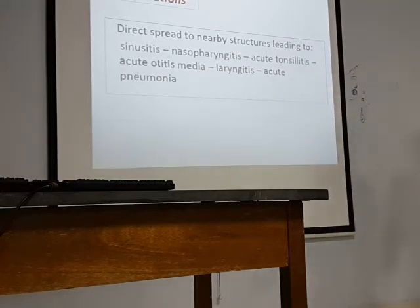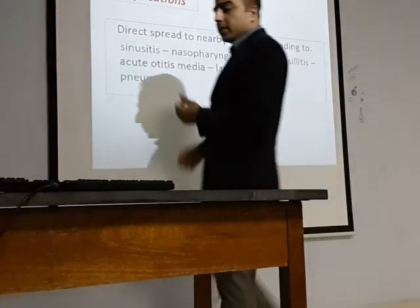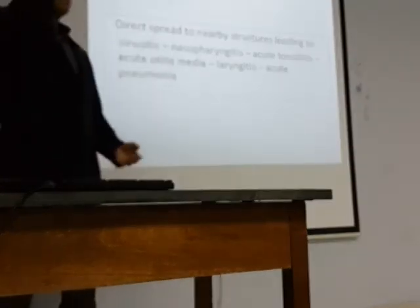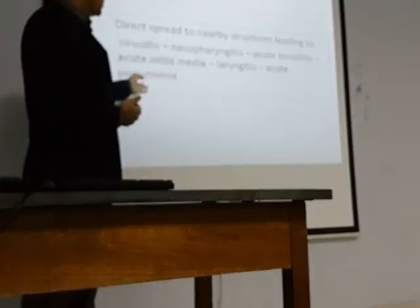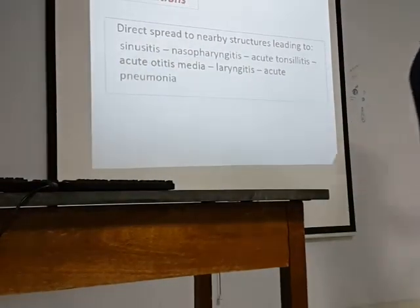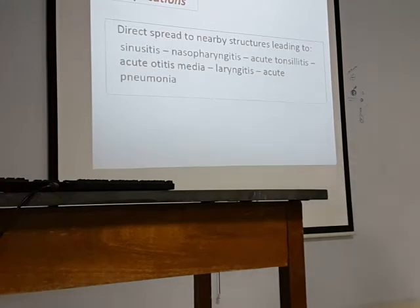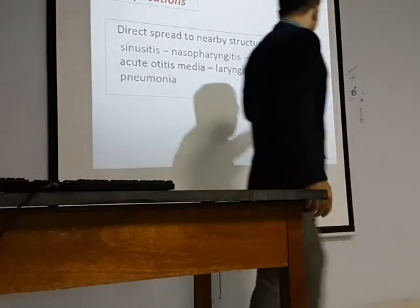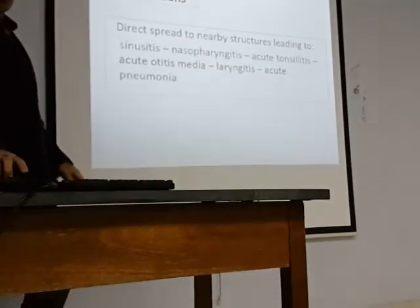Rhinitis can spread to various structures. It can go to the sinuses causing sinusitis, to the pharynx causing nasopharyngitis, cause otitis media, tonsillitis, and then go down to the larynx. Sometimes a person first has upper respiratory tract infection, then develops cough with sputum, meaning involvement of the lower respiratory tract. If upper respiratory infections are prolonged they can involve the lower respiratory tract and even cause pneumonia.